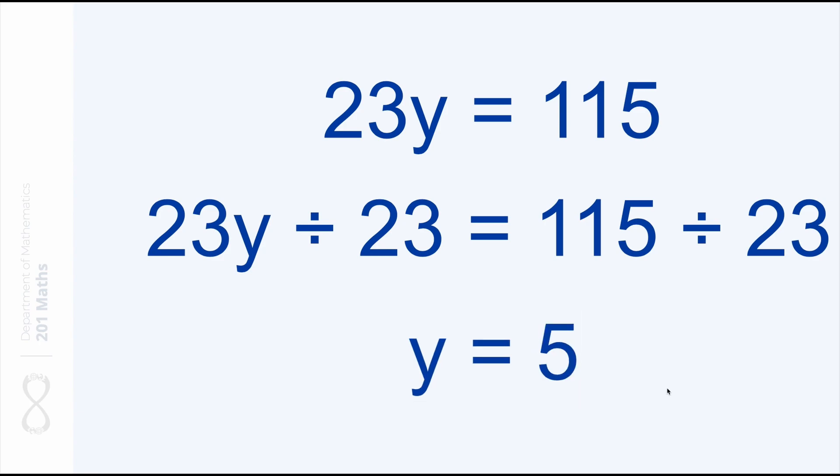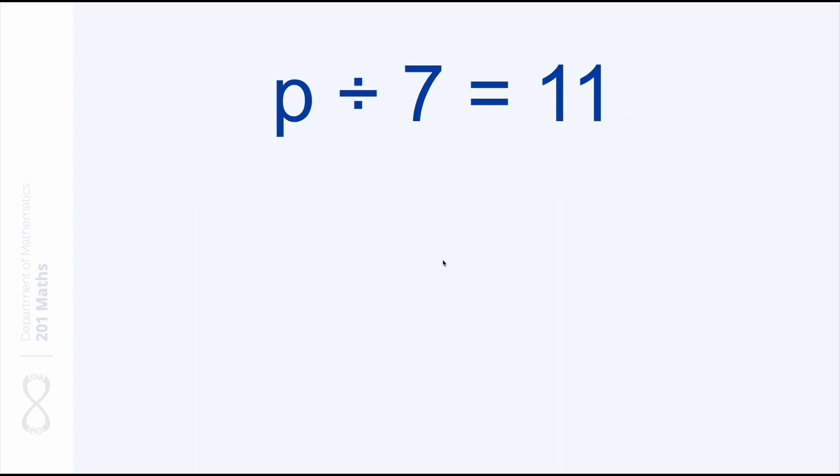The value of y is 5. We have solved for y. Let's do one more example. This time our variable is divided by something. Here p is divided by 7. So we need to neutralize this divided by 7. And how do we do that? Yes, we multiply by 7.